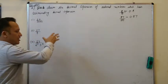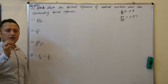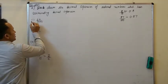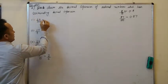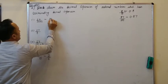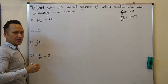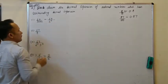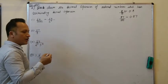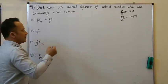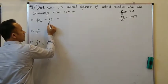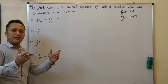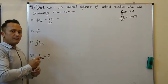Jo pehle question mein kar chuke hain. The first part is 13 upon 1325. Aakko iski pehle kya kiya tha? Denominator ko two to the power five likha tha. Now as I said, mujhe isko terminating format mein, decimal format mein likhna hai. Ye terminating to hai. Kyunki denominator two aur five ki terms mein likha ja sakta hai — two ki power zero ho sakti hai, aur five ki term to hai. Iske alawa denominator mein koi aur prime number nahi hai. That's why it is terminating.